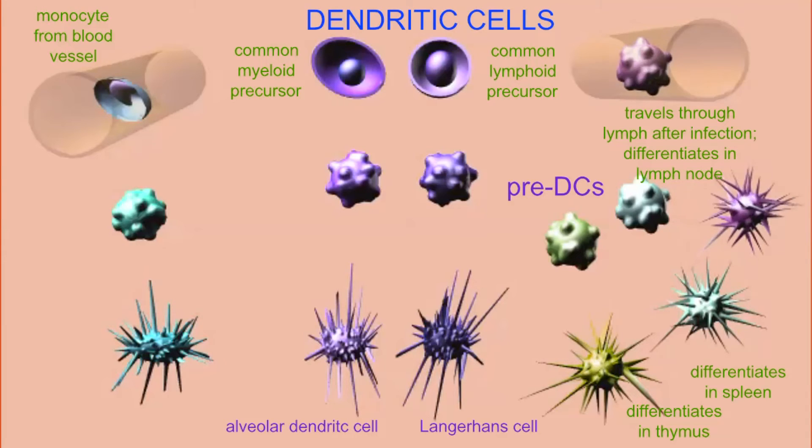So thus, dendritic cells can have a variety of different origins and different dendritic cells express a variety of different receptors.